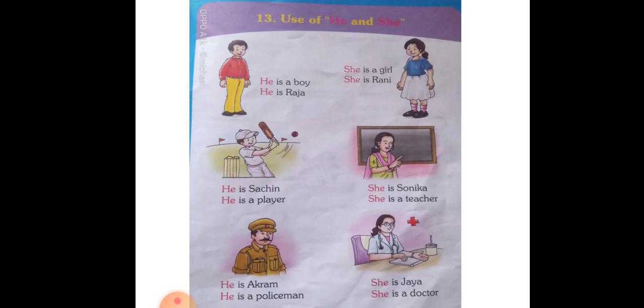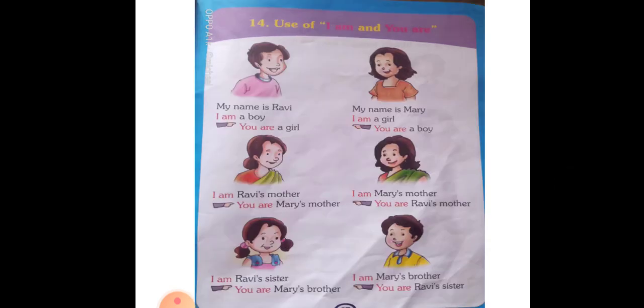Now, turn to page number 67. Use of I am and you are. My name is Ravi. I am a boy. You are a girl. My name is Mary. I am a girl. You are a boy. I am Ravi's mother. You are Mary's mother. I am Mary's mother. You are Ravi's mother. I am Ravi's sister. You are Mary's brother. I am Mary's brother. You are Ravi's sister.